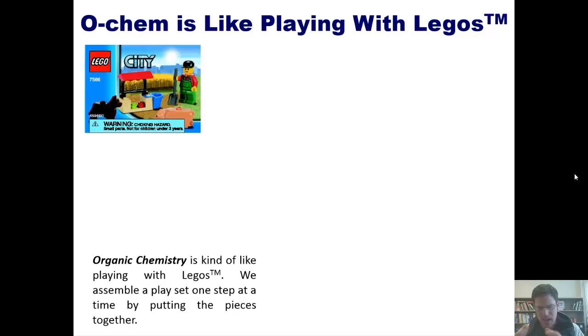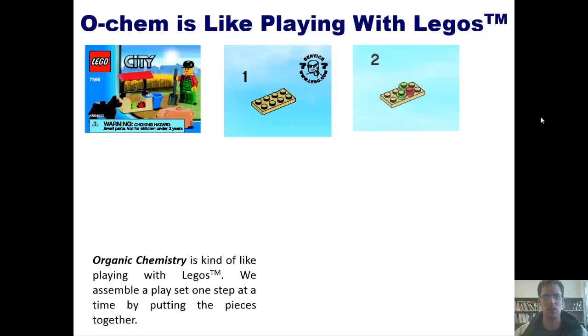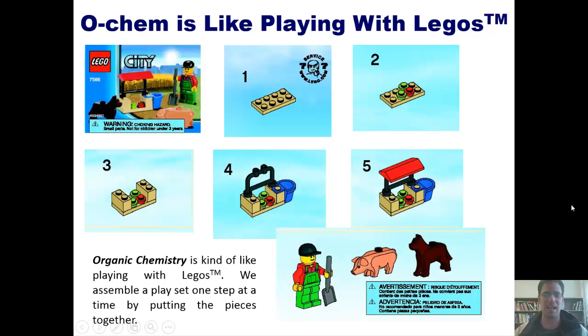When you open the box, you have all these tiny little pieces. How do you turn the tiny little pieces into what is shown in the picture? By putting them together one step at a time. In the case of this farmer with his cute little watering hole and his dog and his pig, you'd put them together according to these instructions. You begin by taking this block and adding these pieces to it, and then those pieces, these pieces, those pieces, and then you bring in the farmer and his animals. Isn't that exciting?